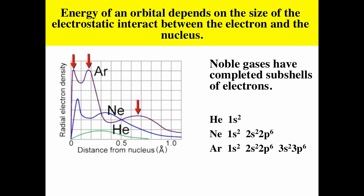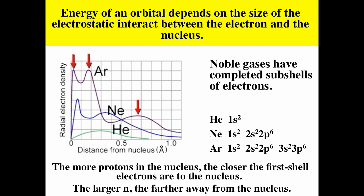The electron density is very diffuse. For helium the 1s maximum is at about 0.3 Å; for neon it is at about 0.05 Å; and for argon it is even closer to the nucleus. The first shell actually gets squeezed smaller as you go down the periodic table, consistent with the energy diagram showing the 1s going lower — more protons in the nucleus pull the electron density closer through stronger electrostatic interaction.